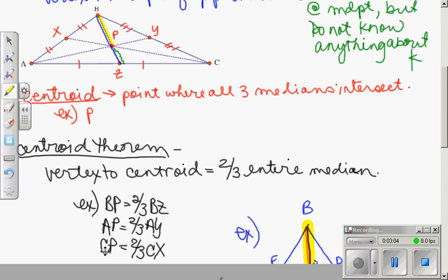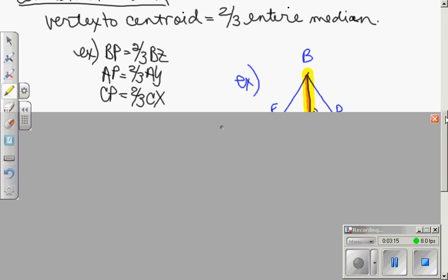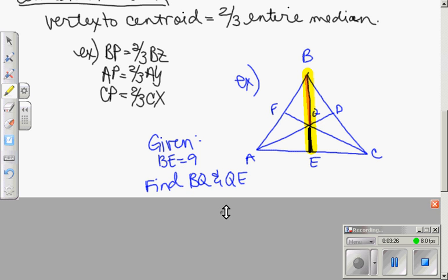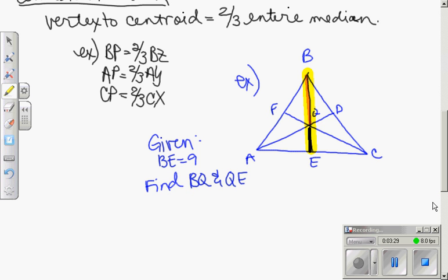And so you can set up all of the relationships that AP is equal to two-thirds of AY, and CP is equal to two-thirds of CX. So in looking at an example of this theorem, if I give you triangle BCA with centroid Q, and I give you BE as 9, and I ask you to find BQ and QE, which are highlighted, what I can set up,